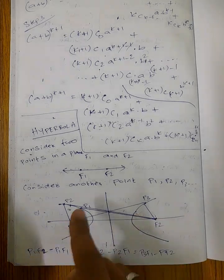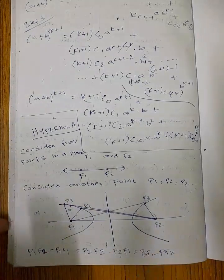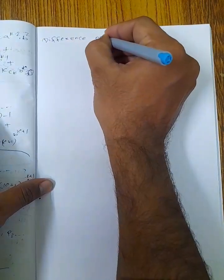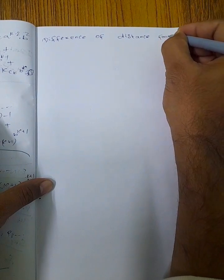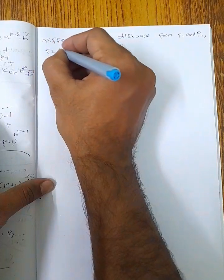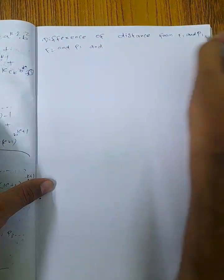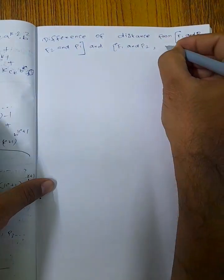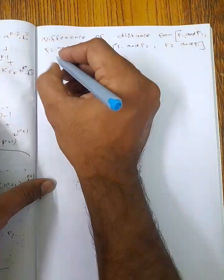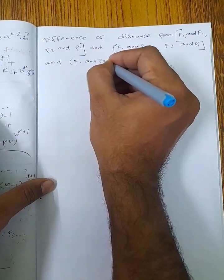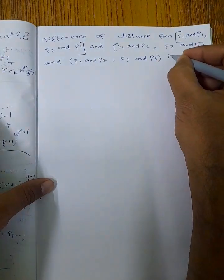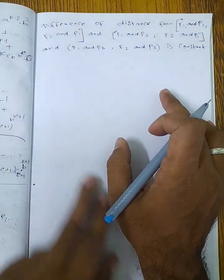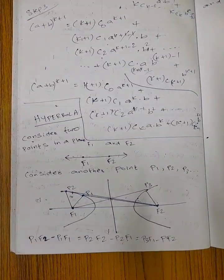So the difference of distances from F1 and F2 for any point on the curve — whether P1, P2, or P3 — is always constant. This constant difference of distances defines the form of the hyperbola.